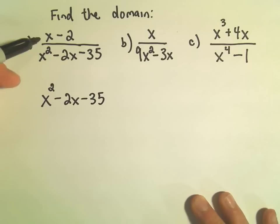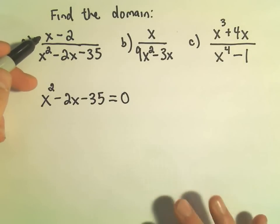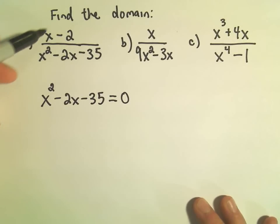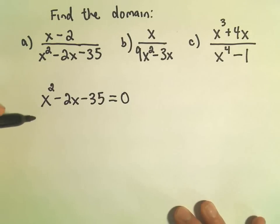So for part A, if we want to find the domain of (x - 2) over (x² - 2x - 35), I just set the denominator equal to zero. To me, the numerator is kind of irrelevant. I mean, I do recognize that it's a rational expression, but after that, in terms of finding the domain, it has no more importance.